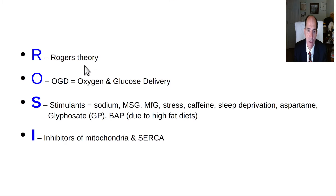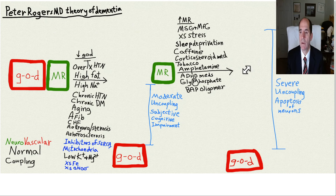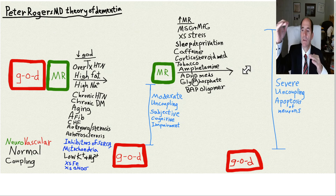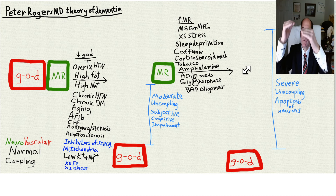My theory of neurodegeneration — the Rogers theory — has the mnemonic ROSIE: Rogers theory, OGD (oxygen-glucose delivery), Stimulants, Inhibitors, and mitochondria. Basically, you get neurovascular uncoupling — the supply and demand theory, or the overworked and underpaid theory. Your neuron has a baseline metabolic rate, and the oxygen and glucose delivery must be coupled to meet that demand.